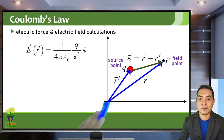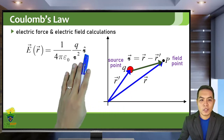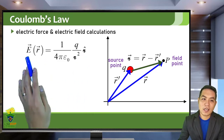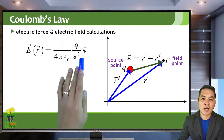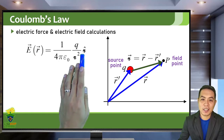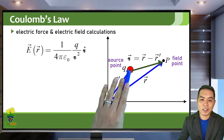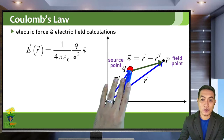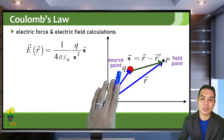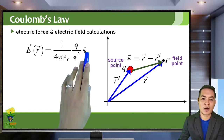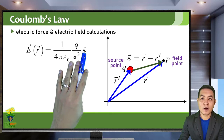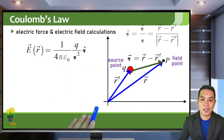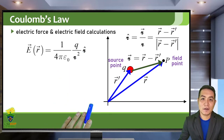The separation distance vector is the curly R vector. The direction of the electric field is always along the direction of the separation distance vector — along the direction connecting your source point Q and the field point. So the electric field is along the curly R hat direction. To get the unit vector of the separation distance vector, just divide it by its magnitude.